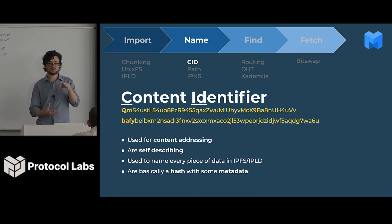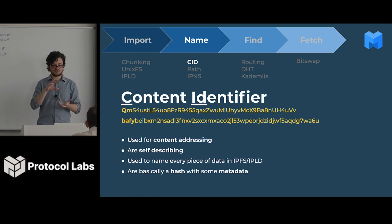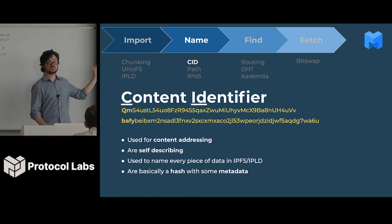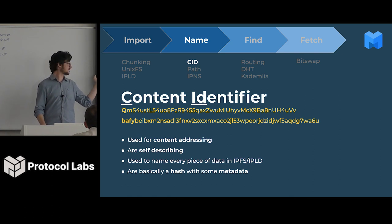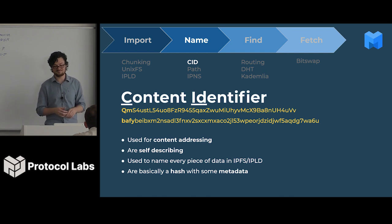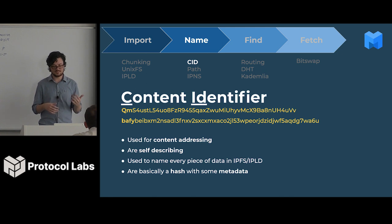Now we've finished with the internal data structures. We can talk about how we actually name things in the system. We now have all these objects stored in IPLD, and we need to be able to talk about them and pass them around the network. For this, we use something called CIDs, or content identifiers. You'll see two examples of CIDs — the first is one you're probably used to; the second is the newer style CID we aren't using frequently yet but will switch to eventually. We use CIDs for content addressing — basically, it's a hash plus a bit of extra metadata, and this is how we name every single piece of data in IPFS and IPLD.